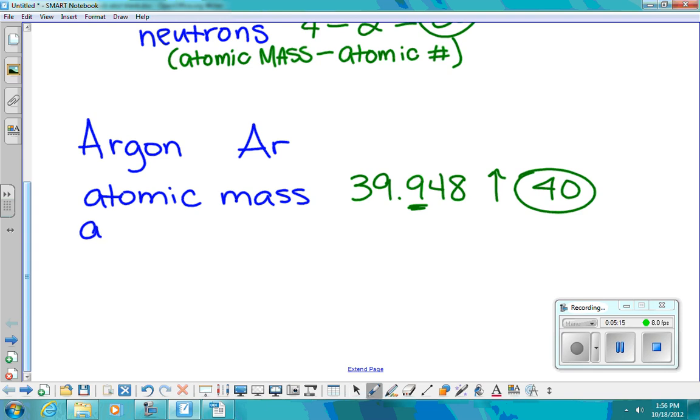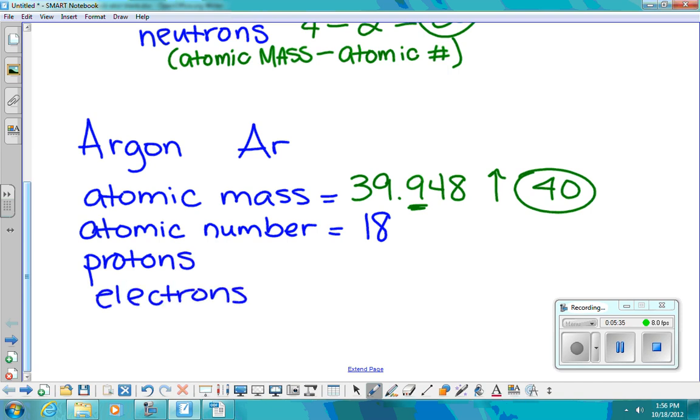Then we have to find our atomic number. Which in this case, it lists it as 18. Protons, electrons, and neutrons. So the number of protons we know is going to be equal to the atomic number. So this also equals 18. Electrons and protons equal each other in neutral atoms. So this is also 18.